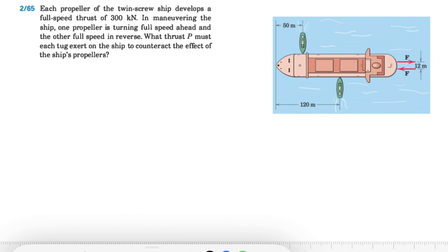The thrust of 300 kilonewtons force. So we have these two forces of F that are 300 kilonewtons, and actually these two propellers are acting against each other. So one of them is going ahead and the other one is in reverse. And the question is asking what thrust P must each tug exert on the ship? You have these two tugs that they need to apply the force P in order to counteract the effect of the ship's propeller.